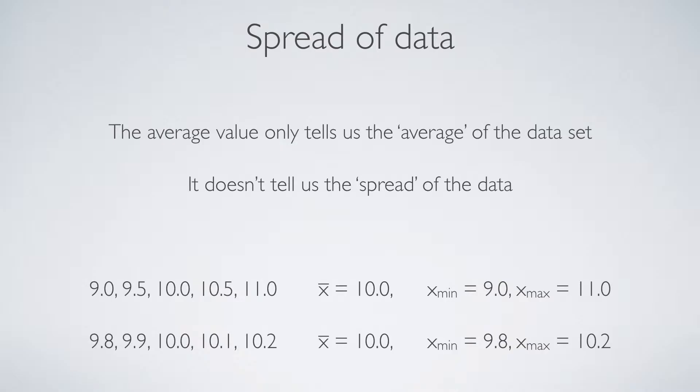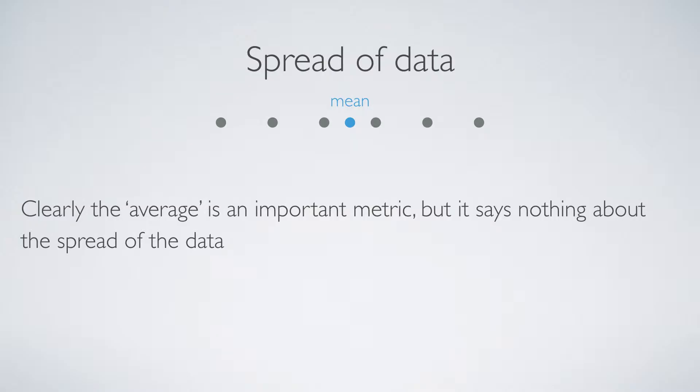Numerically, I have these two data sets here, one varying between 9 and 11, and the other between 9.8 and 10.2. The mean of each is 10.0, but the range is very, very different. So clearly the average is an important metric, but we need to have something additional to tell us about the spread of data.